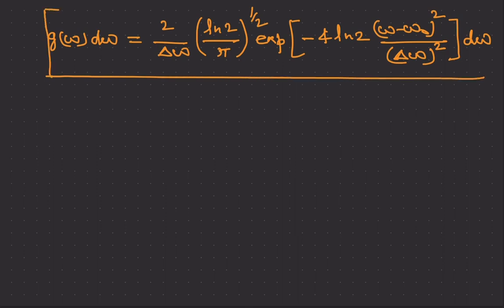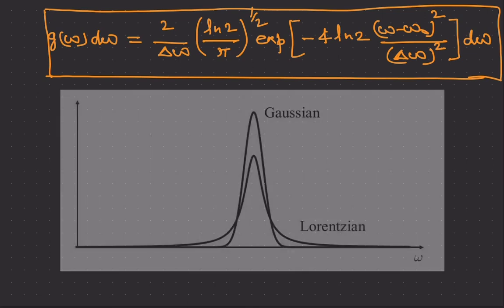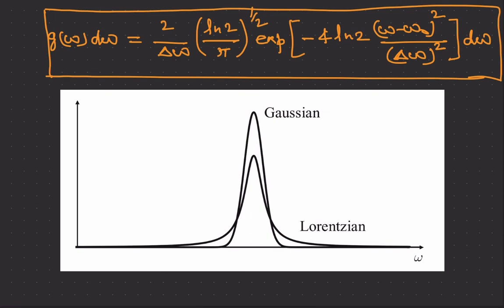Now we will see by diagram that on a comparative plot of a Lorentzian and Gaussian line having the same full width at half maximum, the FWHM is the same for both. It can also be seen that the peak value of the Gaussian is more and the Lorentzian is less in comparison to the Gaussian, and the Lorentzian has the wider tail.